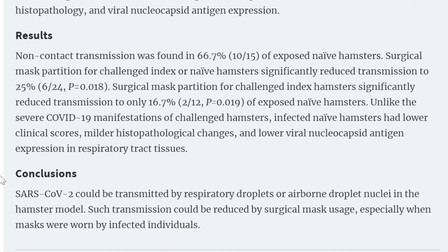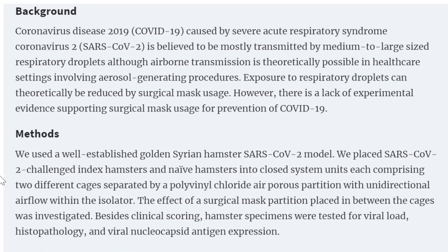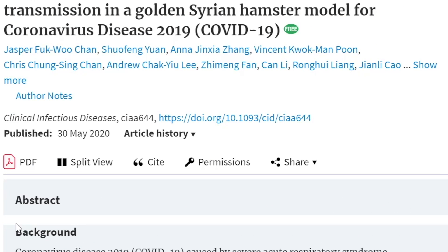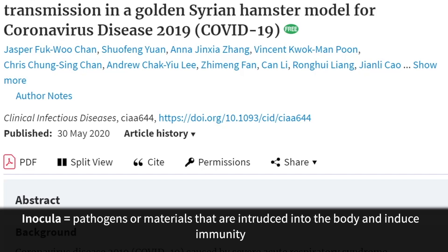Now here's the key though. Unlike the severe COVID-19 manifestations of challenged hamsters, infective naive hamsters had lower clinical scores, milder histopathological changes, and lower viral nucleocapsid antigen expression in respiratory tract tissues. Of course, this type of study could never be done in humans because it would be unethical to knowingly expose a human being to a virus that could potentially kill them. But you can see here that it certainly makes sense that you can, at least in theory, get a higher amount of asymptomatic infections if you can reduce the amount of inoculate that is given to a naive patient.